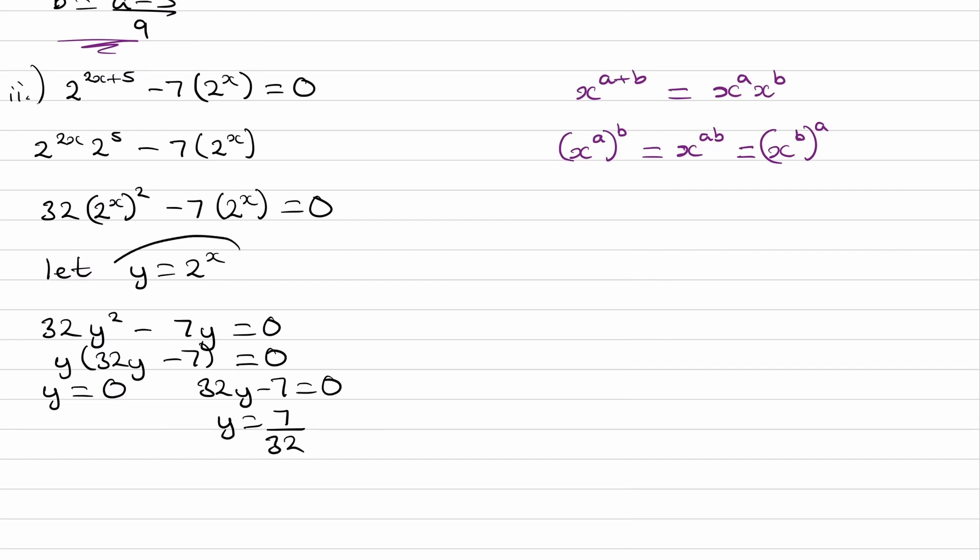So y is equal to 2 to the power of x. So then this tells us that 2 to the power of x is 0, and 2 to the power of x is 7 over 32. This can't be true. 2 to the power of x can't equal 0, and we can see that from the graph. The graph of 2 to the power of x looks like this, where this point right here is 0, 1, and then the graph, as you go towards the left, the y-coordinate gets closer and closer to 0, but never actually reaches it.